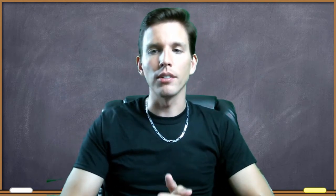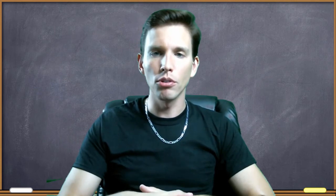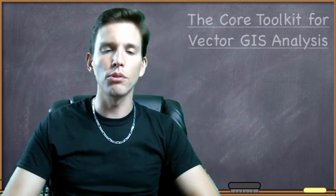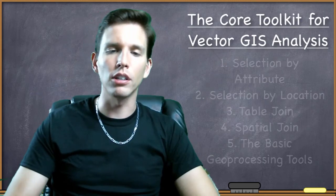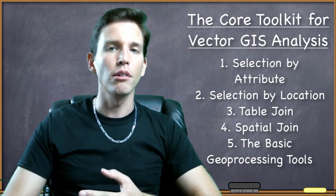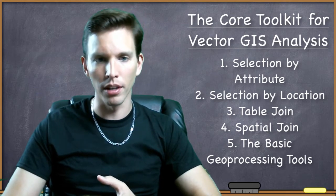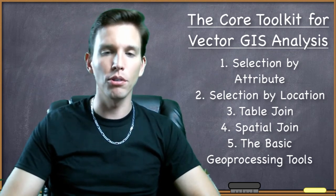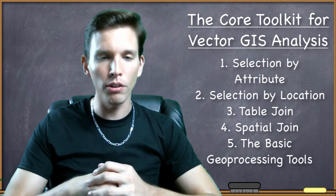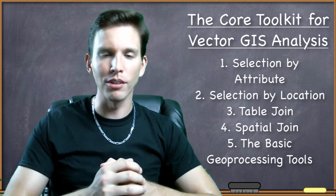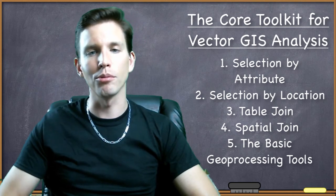So what's in the Core Toolset? The Core Vector GIS Toolkit for vector analysis includes the following. One: selection by attribute. Two: selection by location. Three: the ability to execute a table join. Four: the ability to execute a spatial join. Five: the basic geoprocessing tools — and this includes the six core geoprocessing tools: Buffer, Clip, Merge, Union, Intersect, and Dissolve — plus a bonus seventh geoprocessing tool which I'll introduce when we approach the appropriate video lesson.